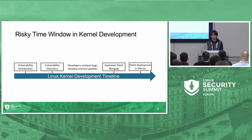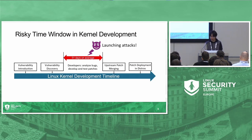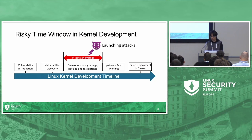In this life cycle, there is a risk time window between vulnerability discovery and patch merging. This time window lasts almost two months, during which attackers have enough time to learn about the vulnerability and develop exploits for it. This risk time window issue is not unique to the Linux kernel but also applies to many other open source projects.